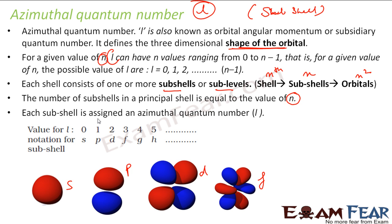And each of these subshells is assigned an azimuthal quantum number. So 0 is given s, 1 is given p, 2 is given d, 3 is given f and so on.